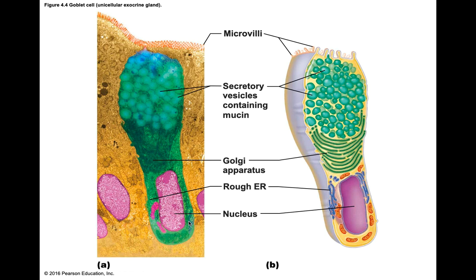Here's a picture of a goblet cell — a unicellular exocrine gland that secretes mucus. It's kind of shaped like a cup, which is why it's called a goblet cell. These goblet cells have secretory vesicles containing mucin, which meets up with water to create mucus as a protective layer for that organ.